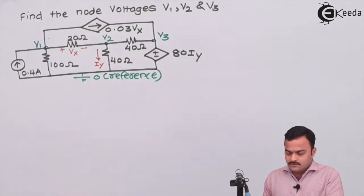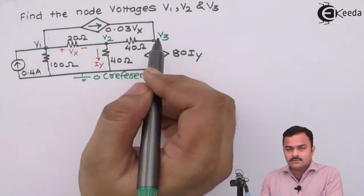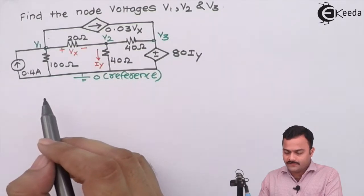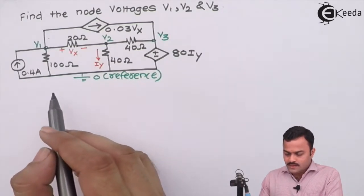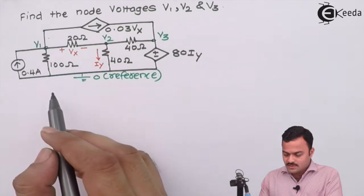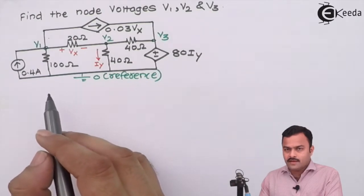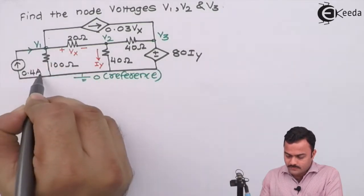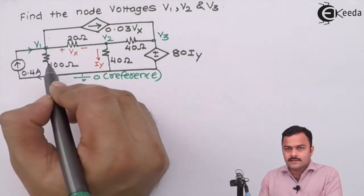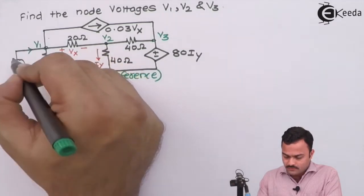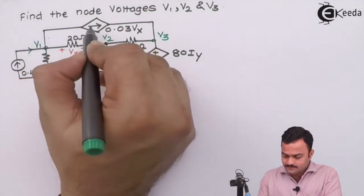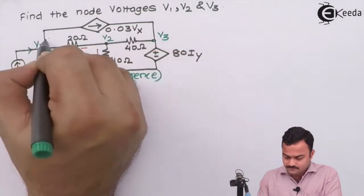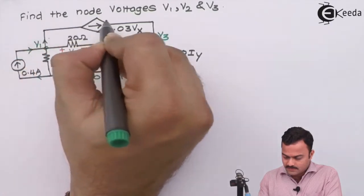As far as method goes, we have to mark the node and its potential first, then mark the current direction for each and every branch. While considering branch current, the first thing we consider is the current source — whether it's independent or dependent — we will maintain the current direction given in the problem. So for 0.4 ampere this will be the current direction, and for 0.03 Vx the current direction will be like this.